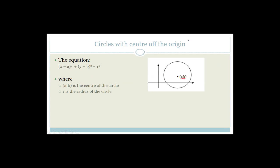More importantly, circles with a center off the origin have the formula (x − a)² + (y − b)² = r². This formula is on the formula sheet. Grade 12s, I have to stress: if you don't know the formula off by heart, you need that formula sheet next to you — it's your tool. Just like your calculator should be near you, your formula sheet should be near you too.